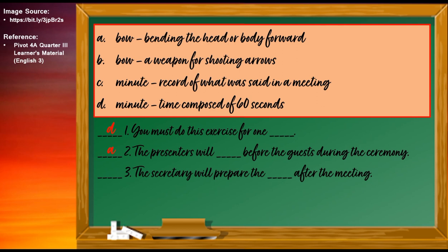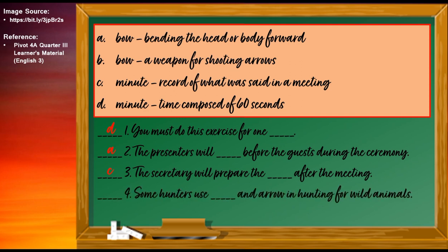Number three: The secretary will prepare the blank after the meeting. The correct answer is LETTER C: The secretary will prepare the minute after the meeting. The word MINUTE means record of what was said in a meeting. Number four: Some hunters use blank and arrow in hunting for wild animals. The correct answer is LETTER B: Some hunters use bow and arrow in hunting for wild animals. The word BOW means a weapon for shooting arrows.